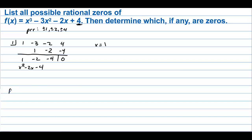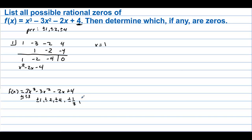Now what if it would have been f of x equal to 3x cubed minus 3x squared minus 2x plus 4? The possible rational roots would be plus or minus 1, plus or minus 2, plus or minus 4 — all over plus or minus 1. But because the factors of 3 are plus or minus 1 and plus or minus 3, we also get plus or minus 1 third, plus or minus 2 thirds, and plus or minus 4 thirds. That way we get all of the p's — the factors of 4 — over all of the q's, which are the factors of 3.